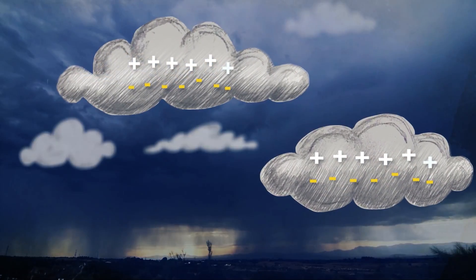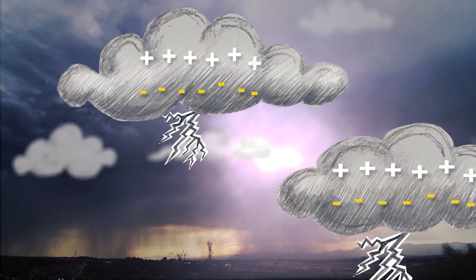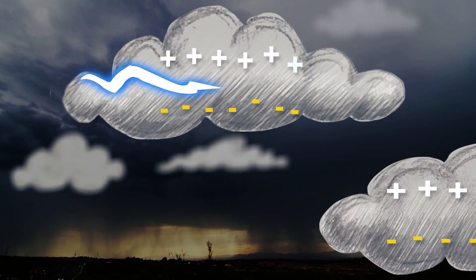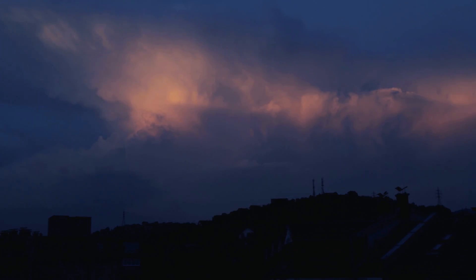If they separate, the lower part of the cloud becomes negatively charged while the upper part of the cloud can be positively charged. The positive and negative charges cancel each other out by shooting electricity between them. And that electricity is lightning.